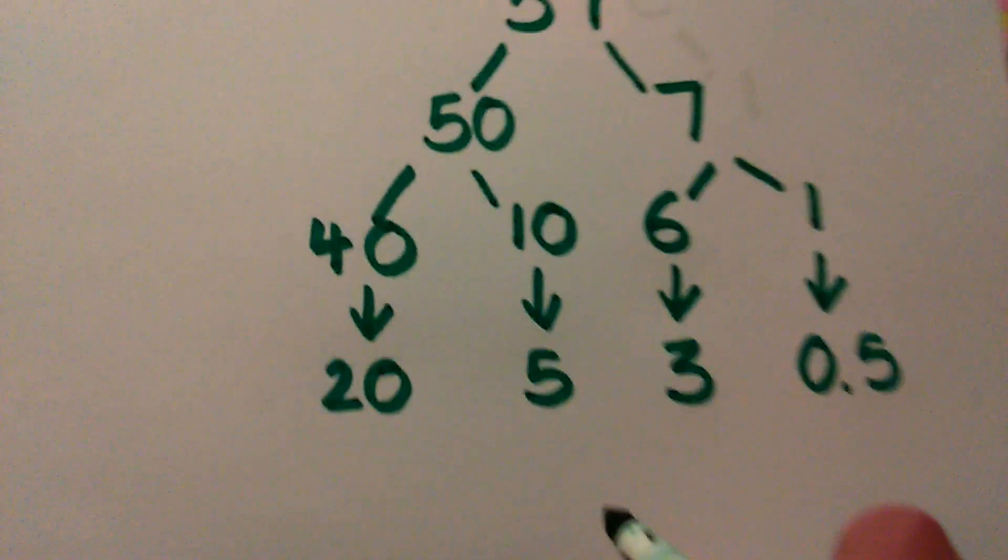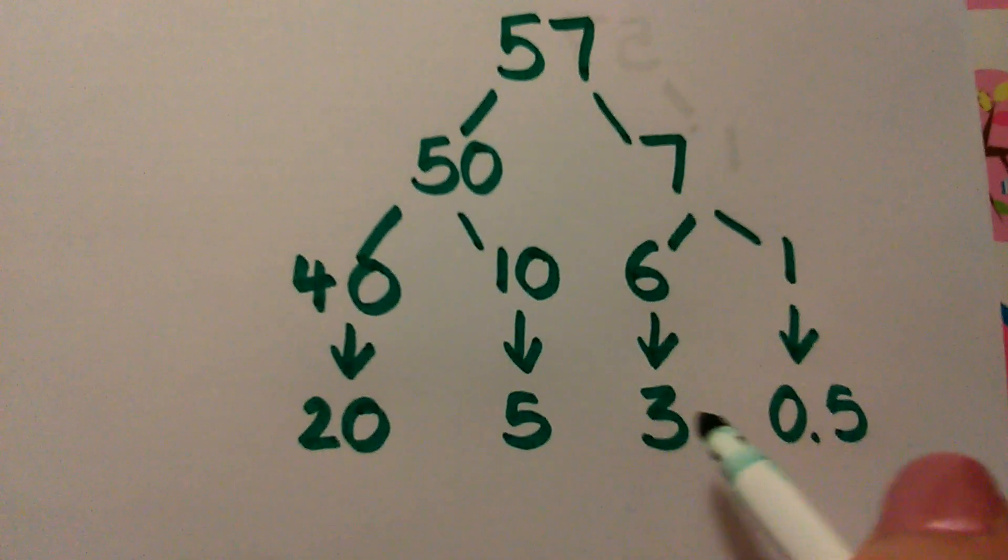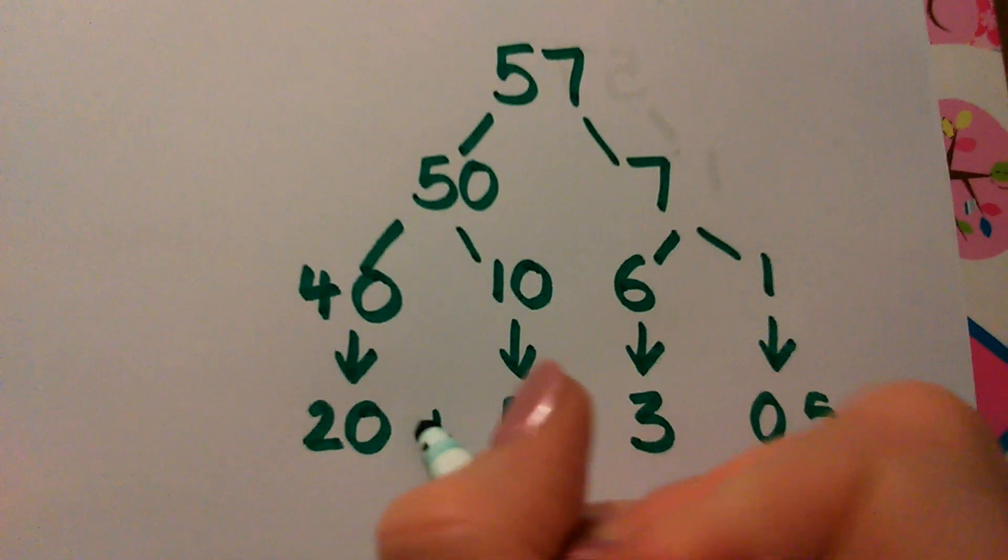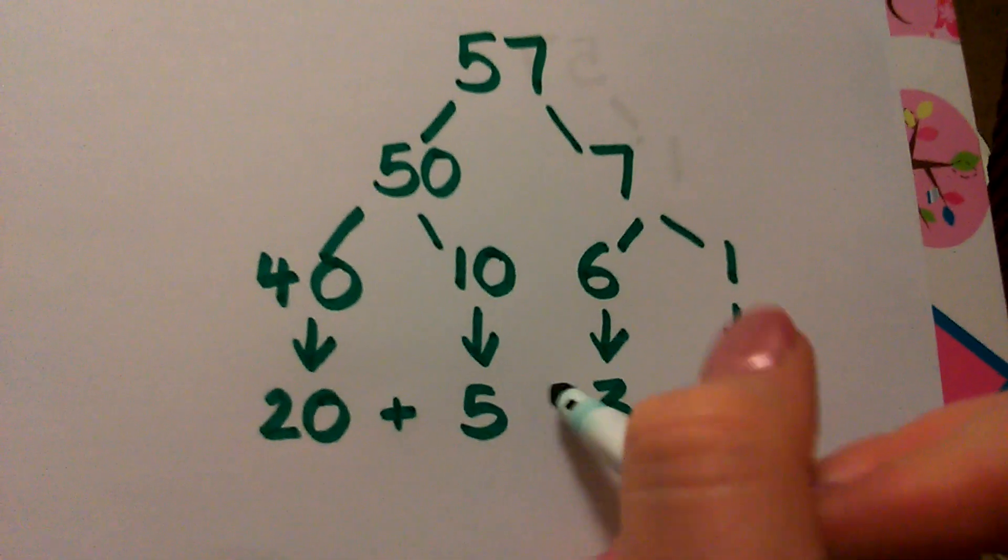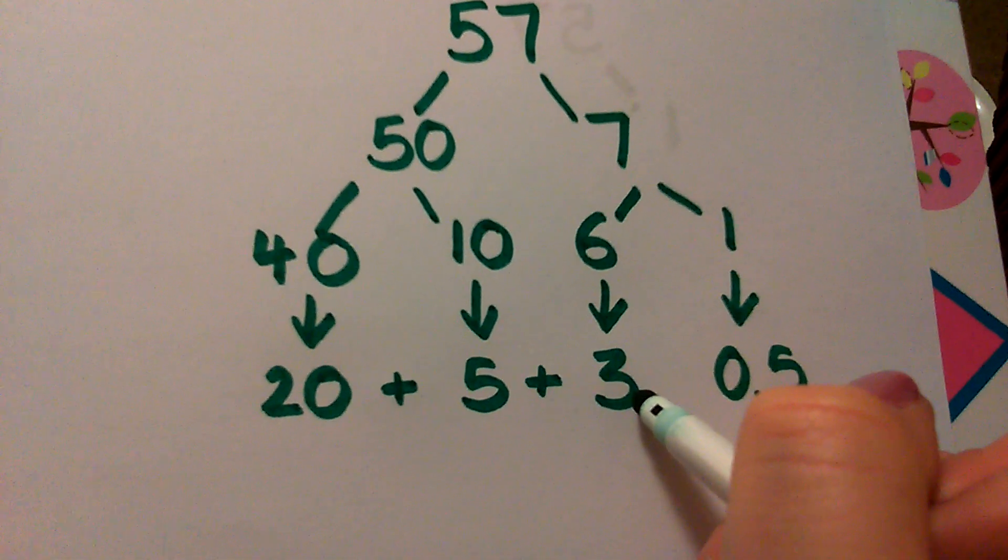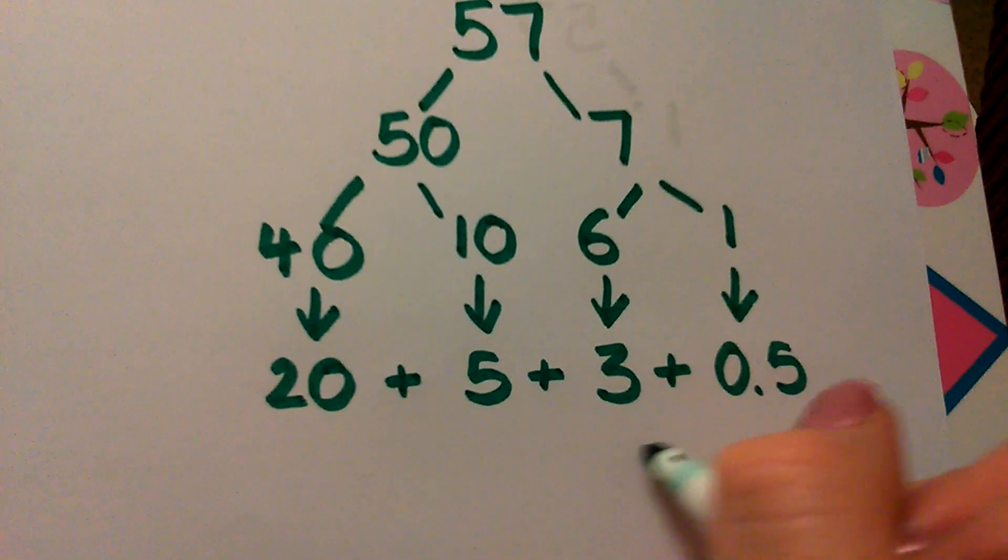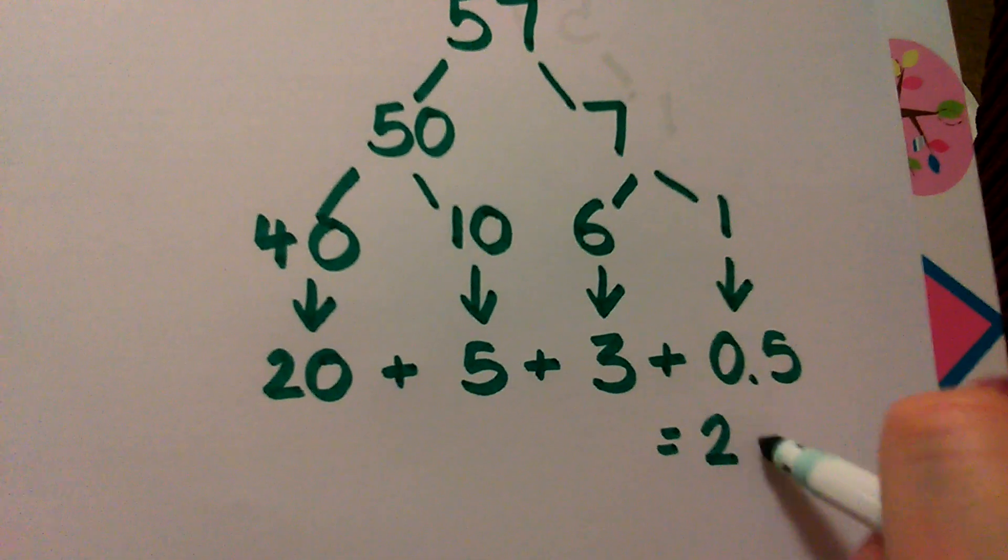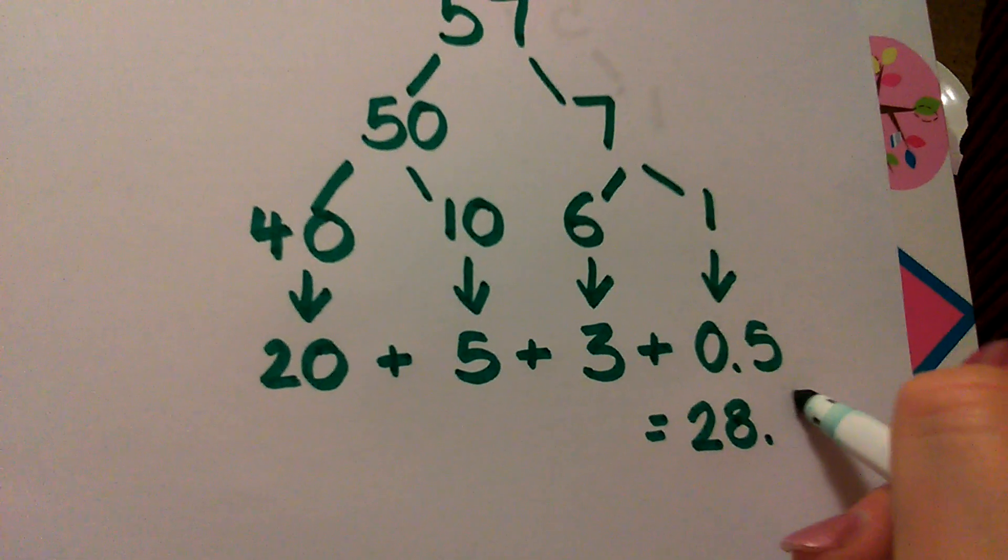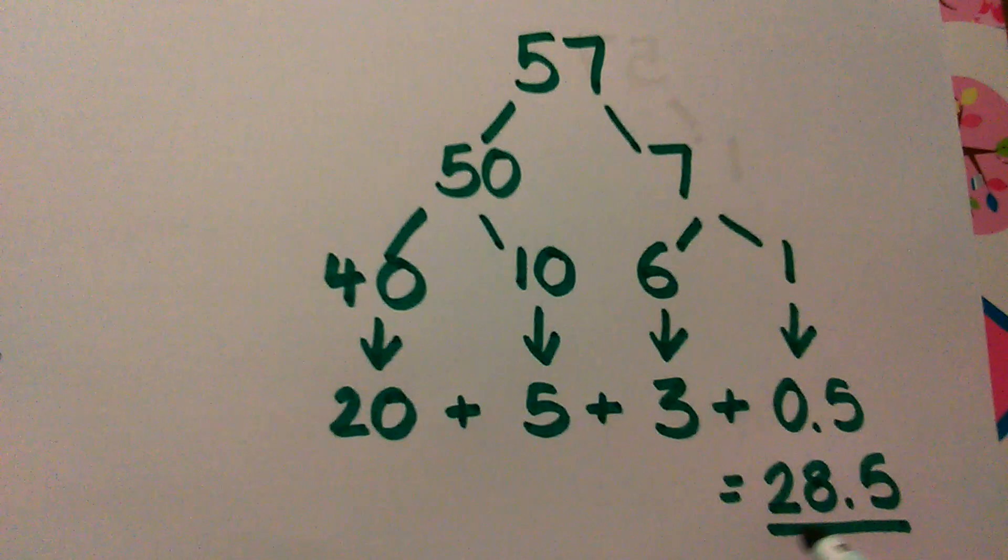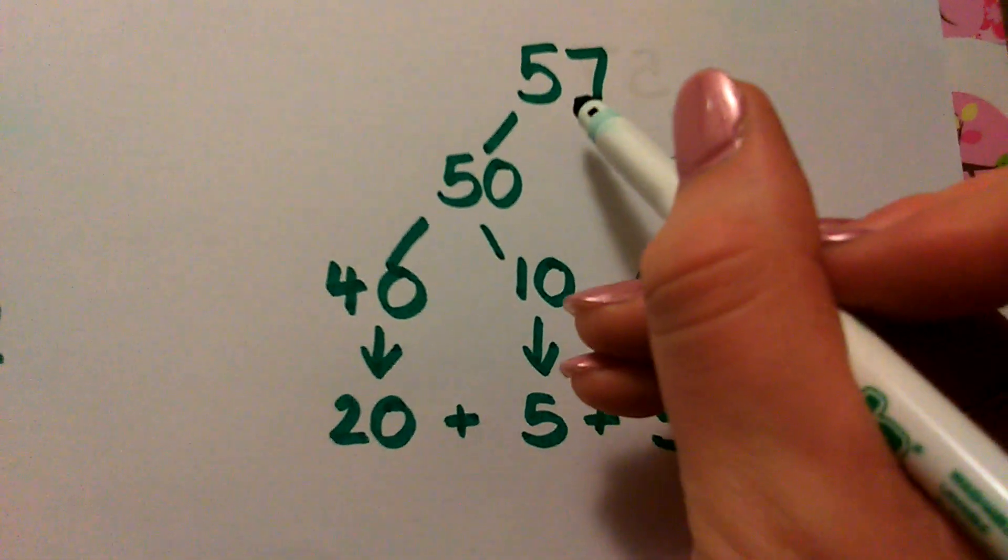And then just like before, we just add up all these different parts. So 20 add 5 is 25. Add 3 is 28. Add 0.5 equals 28.5. And that's the answer. 28.5 is half of 57.